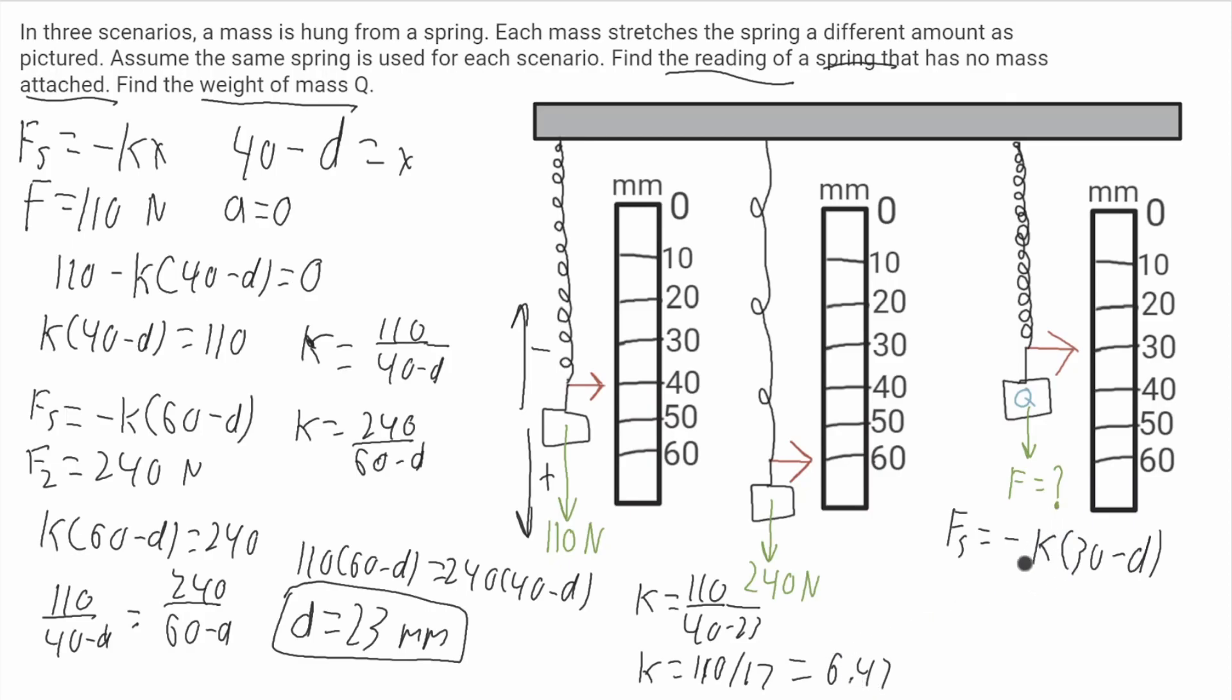So now we know k, we'll say force is equal to 6.47 times 30 minus 23 which is 7, and we'll get that the force of Q will be equal to 45 newtons. And that is our final answer. Thank you for watching.